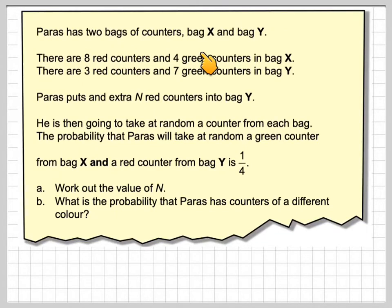Paras has two bags of counters, bag X and bag Y. There are eight red counters and four green counters in bag X. There are three red counters and seven green counters in bag Y. Paras puts an extra N red counters into bag Y. He is then going to take at random a counter from each bag. The probability that Paras will take at random a green counter from bag X and a red counter from bag Y is one quarter. Work out the value of N and what is the probability that Paras has counters of different color.